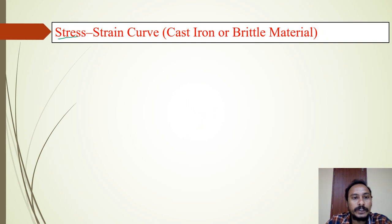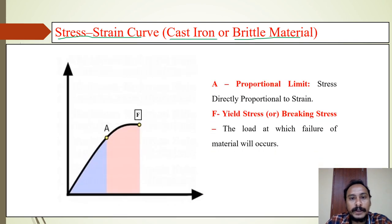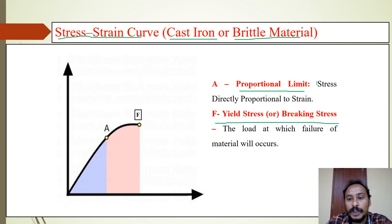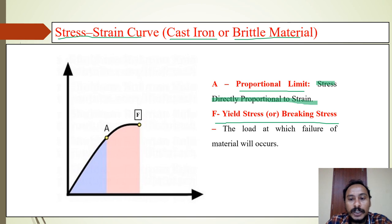Coming to the stress-strain curve for brittle materials like cast iron: when a brittle material is subjected to tensile force, it undergoes different stages before failure — those are proportional limit and breaking stress. We won't get any ultimate tensile stress or elastic limit for brittle materials, since there is no deformation or only a very small amount of deformation. We directly get the breaking stress, which is the load at which complete failure of the material occurs.